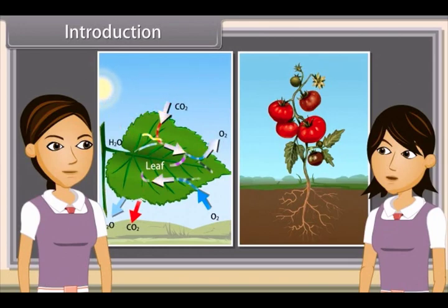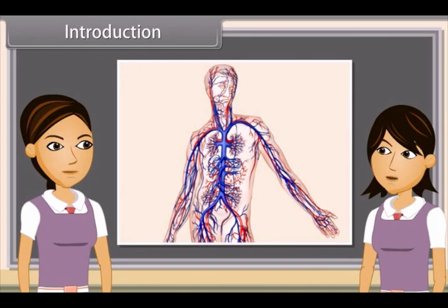Yes Ankita, similarly in animals, the food absorbed by the gut has to be carried to all the body parts. Oxygen absorbed in the lungs has to be transported to every cell of the body. The carbon dioxide produced in the cells has to be carried to the lungs for elimination. All such functions are the result of a transport system.